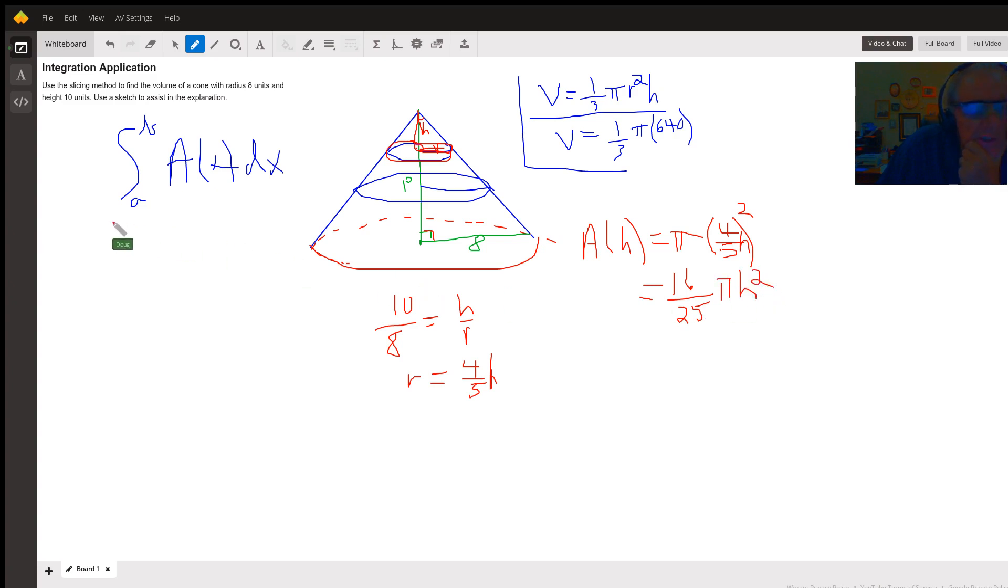And that's what I'm going to use in this formula right here. And I'm going to be adding up all these circles from 0 to 10. The 16 25ths pi I can put out front. That's a constant. And then I've got h squared dh.